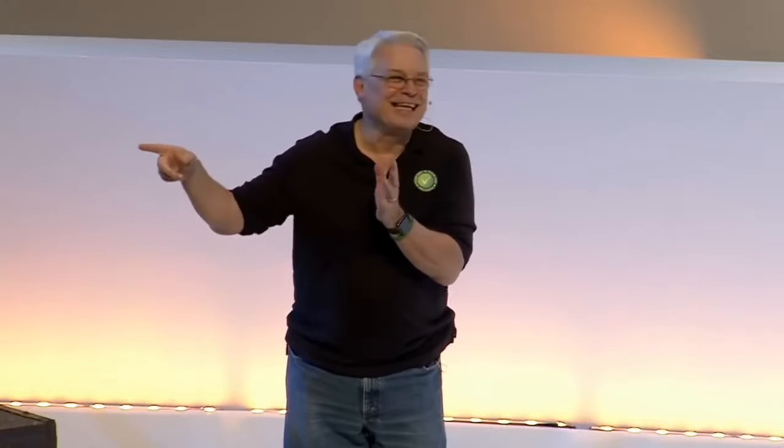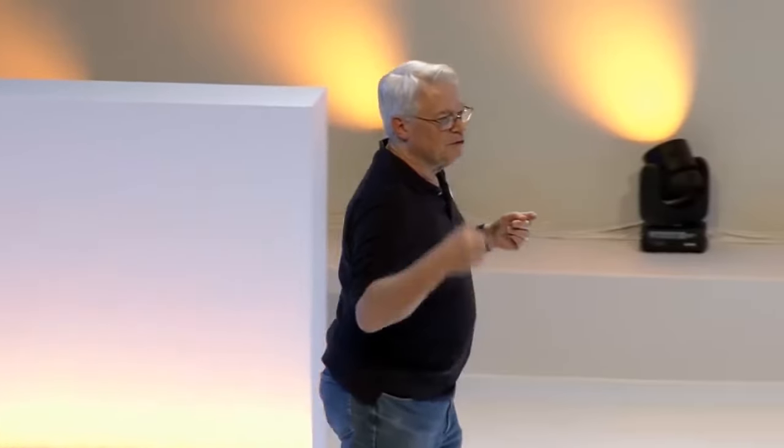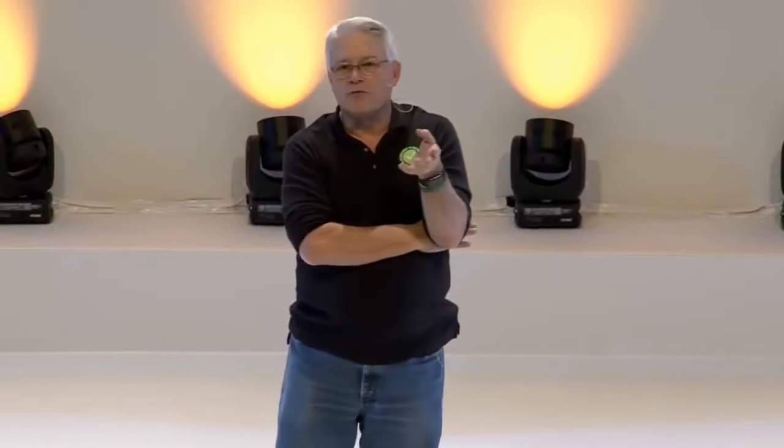What do we programmers do? What do we manipulate? Sequence, selection, and iteration — that's what we do. All the programs you have ever written are combinations of sequence, selection, and iteration: two lines of code in a row, or lines separated by an if statement, or lines in a while loop. That is what we have done since Alan Turing wrote his first line of code in 1946, and we've been doing that ever since. That is a fundamental invariant of programming — sequence, selection, and iteration.